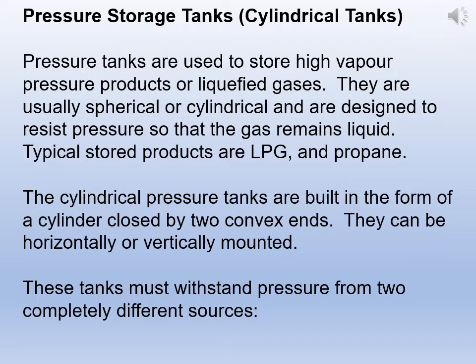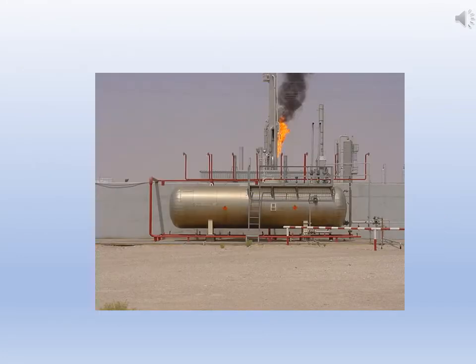Cylindrical pressure tanks are built in the form of a cylinder closed by two convex ends. They can be horizontally or vertically mounted. These tanks must withstand pressure from two completely different sources. An example is a high-pressure cylindrical storage tank used to store either LPG or propane.